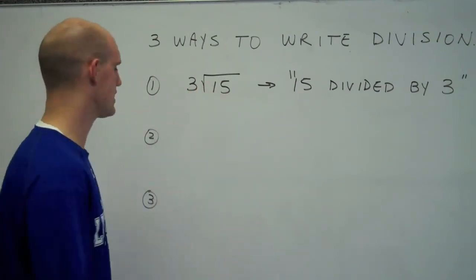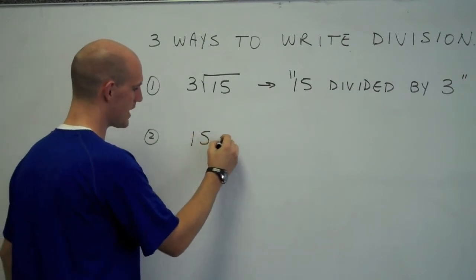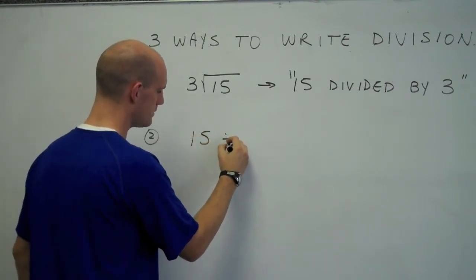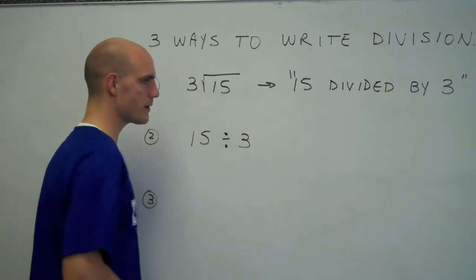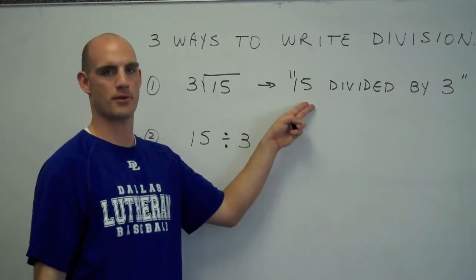The second way that you've probably seen to write division would be 15, the division sign, and 3. It's also written 15 divided by 3.